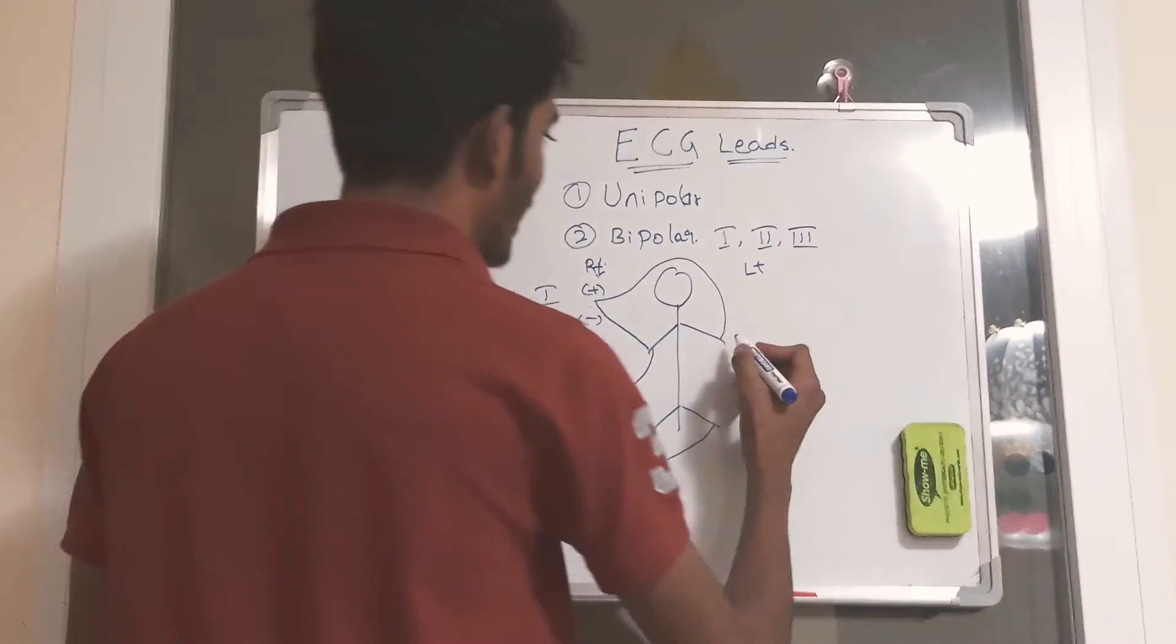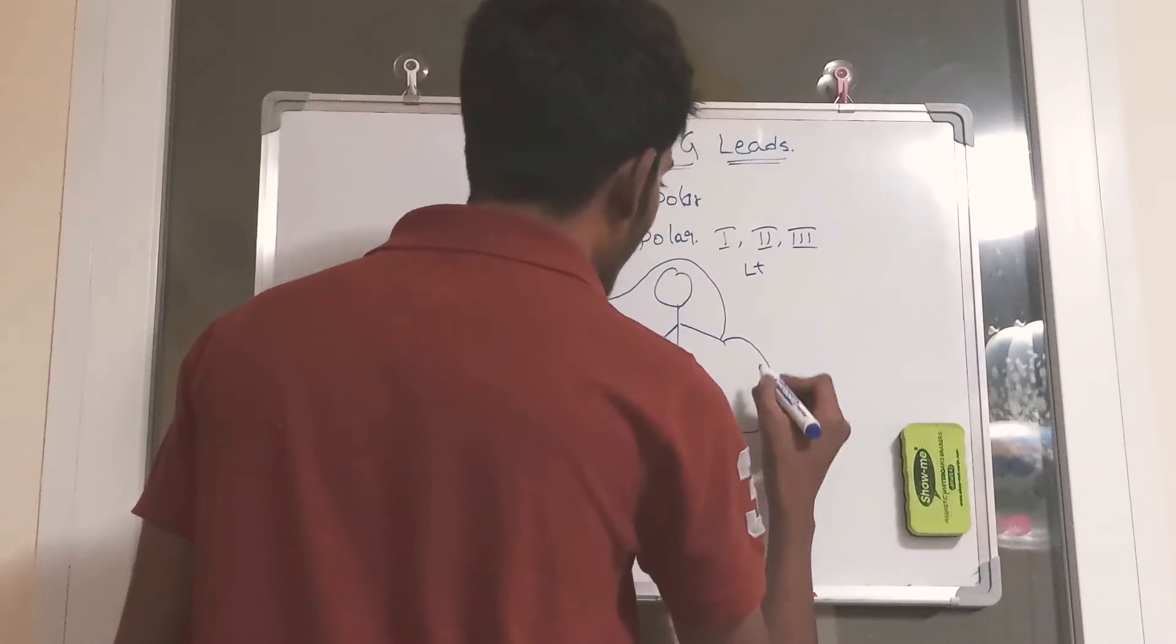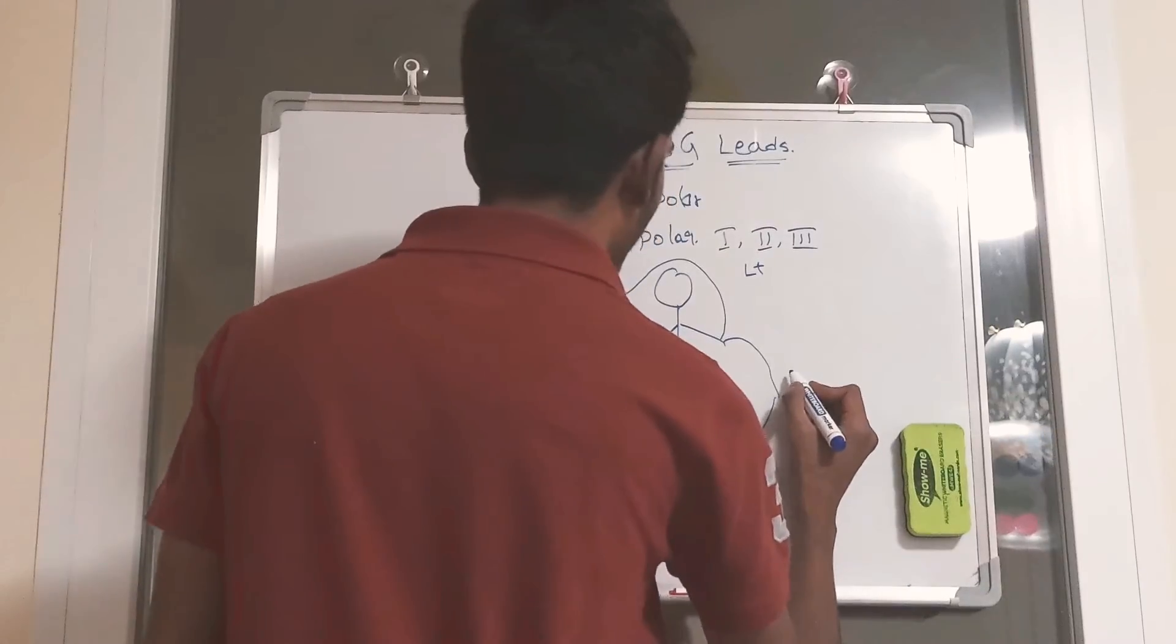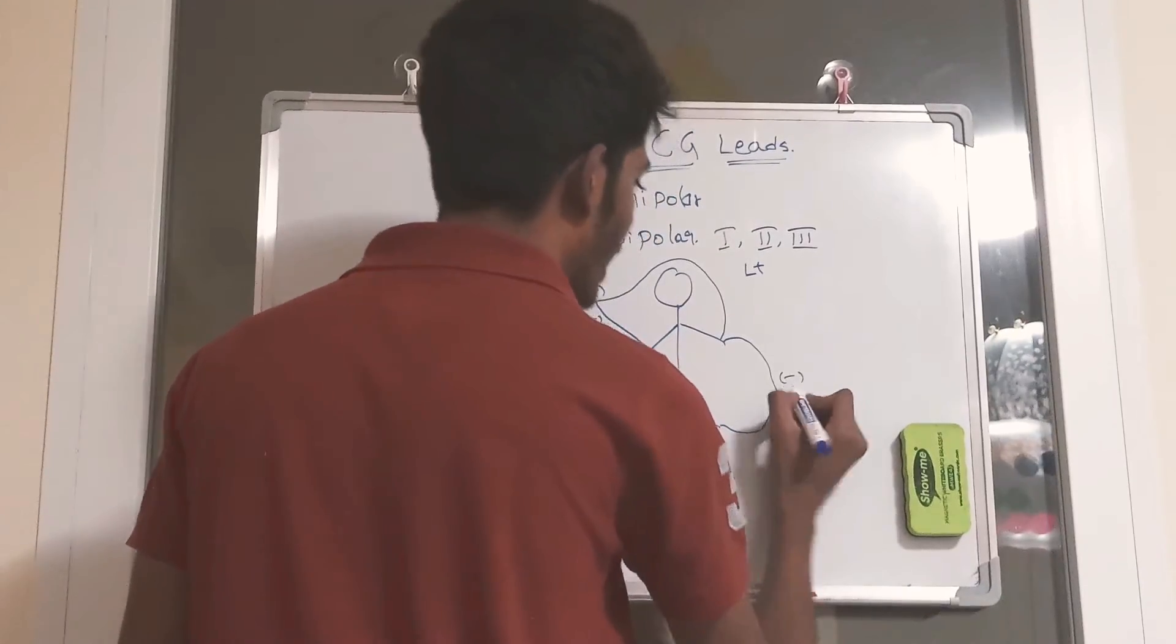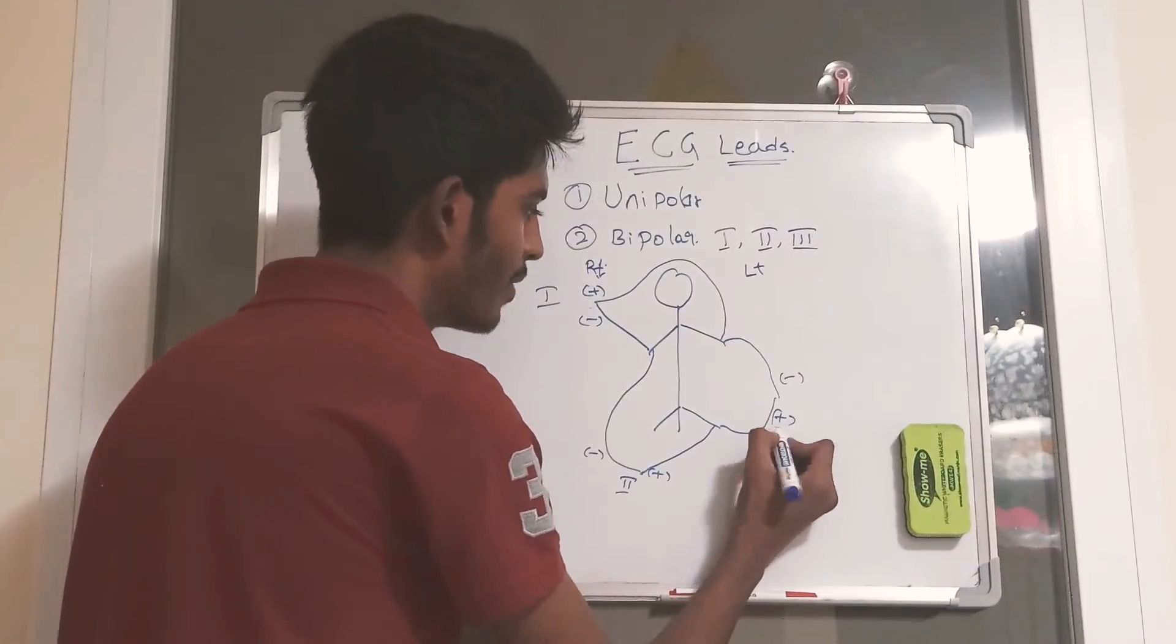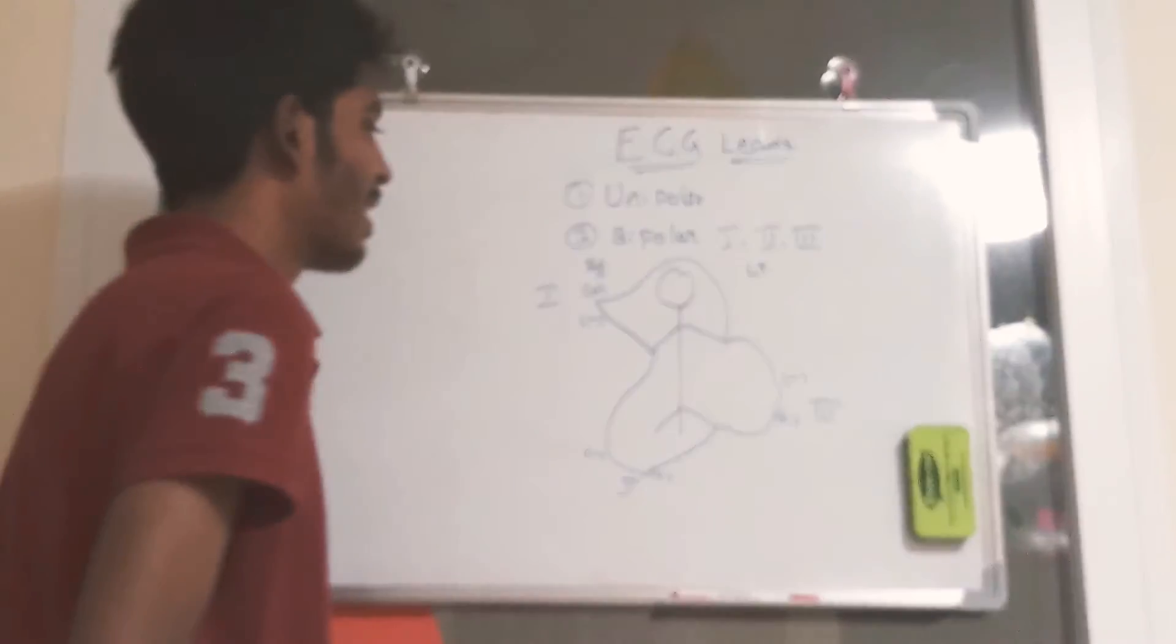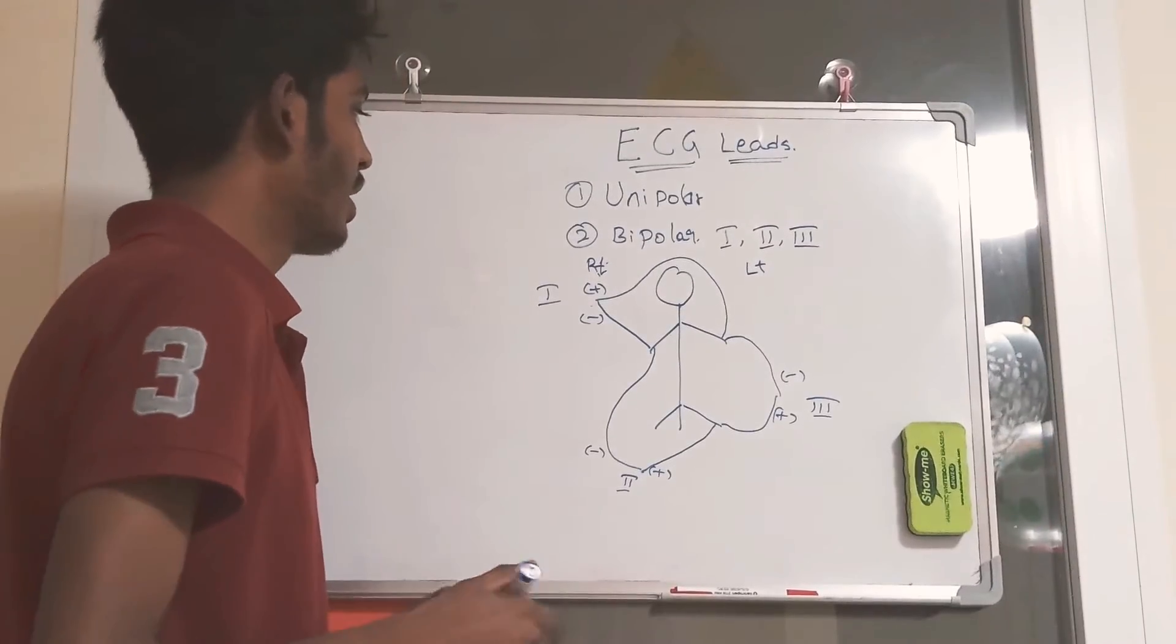Lead 3 is obtained by connecting left arm and left leg. In this lead 3, left arm is connected to a negative side and left leg is connected to a positive side of the machine, the apparatus which records the electric findings of the heart.